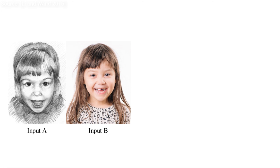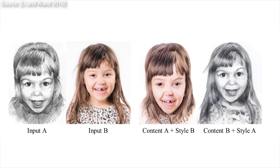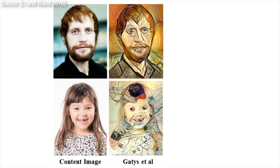In this follow-up paper, the authors use a very deep 19-layer convolutional network that they mix together with Markov random fields, a popular technique in image and texture synthesis. The resulting algorithm retains the important structures of the input image significantly better than the previous work, which is also awesome, by the way.